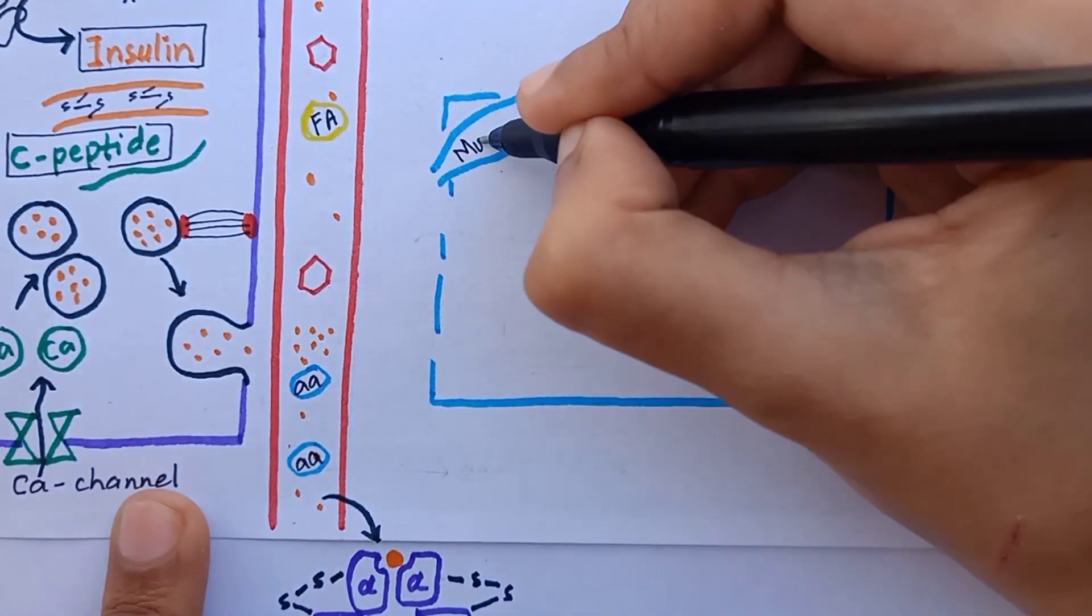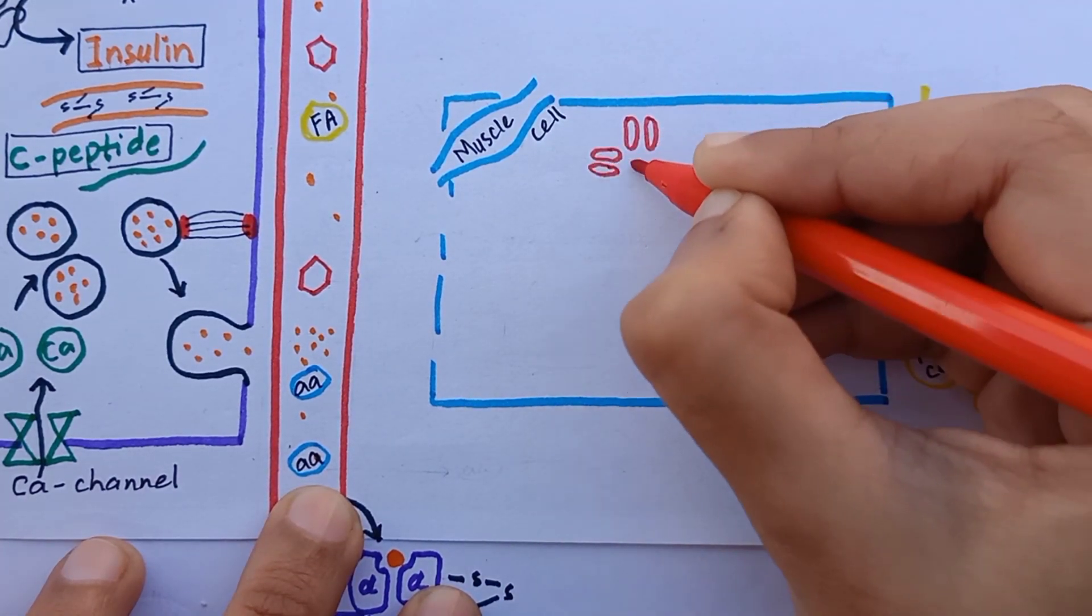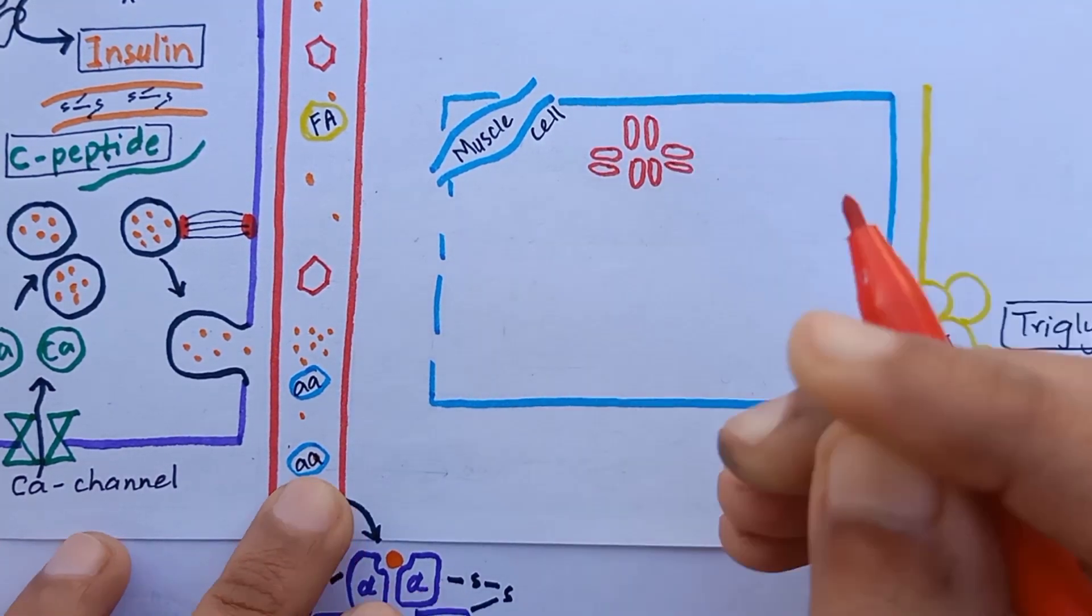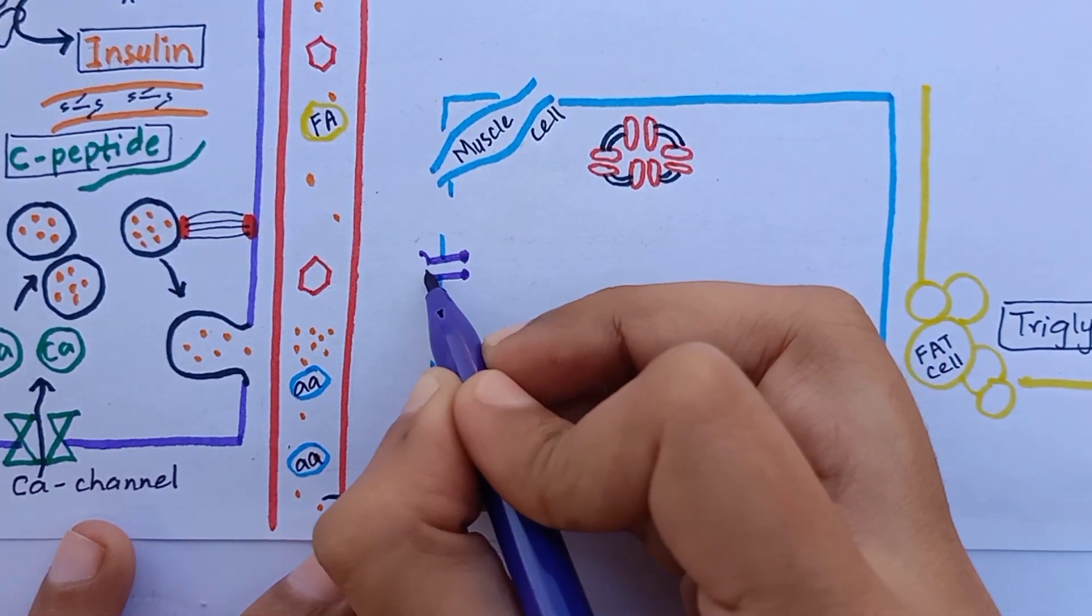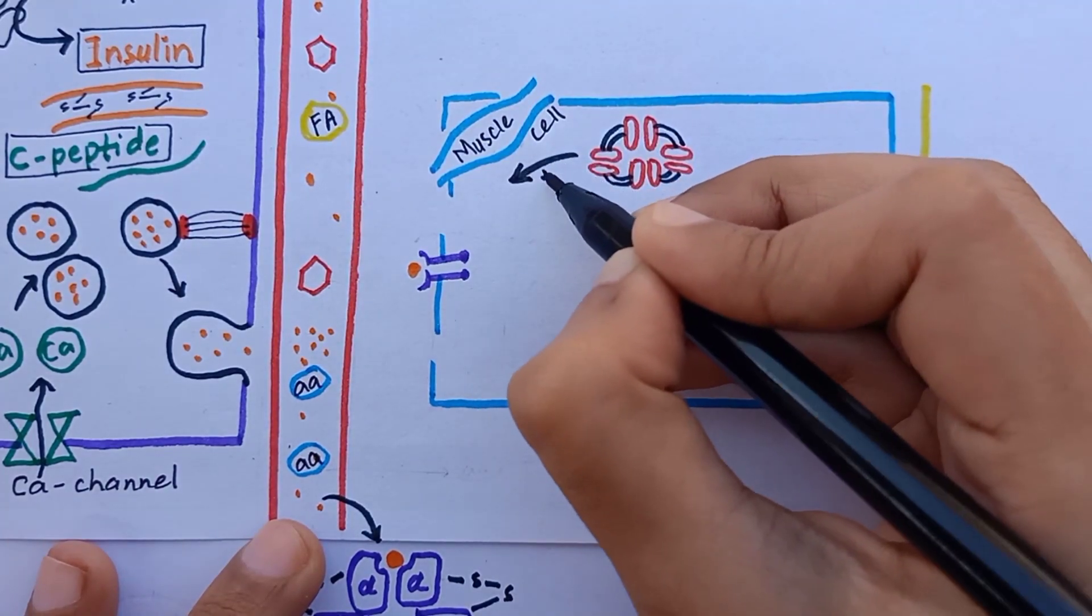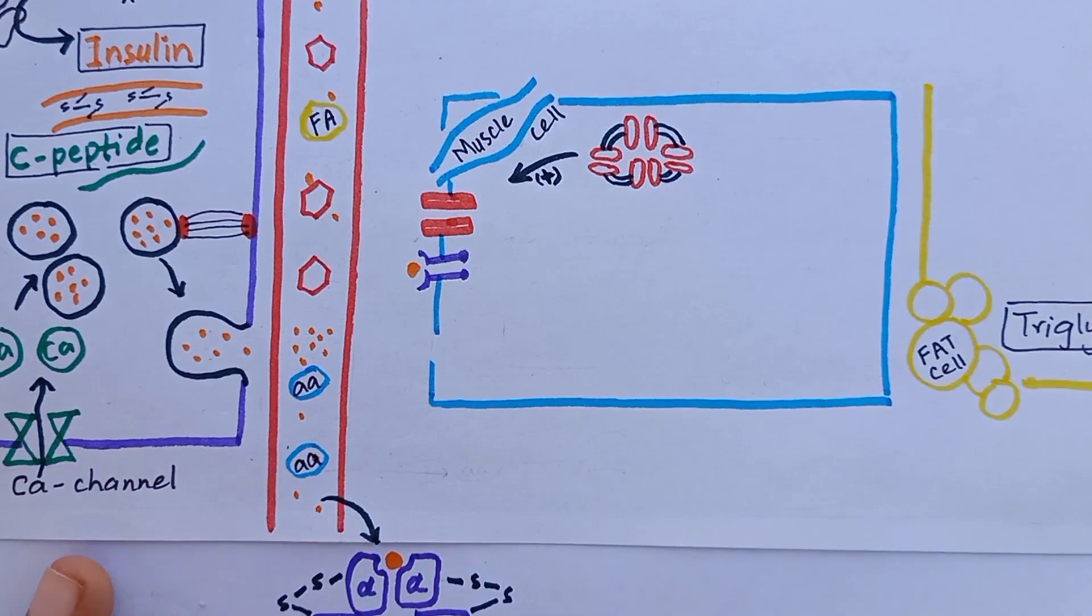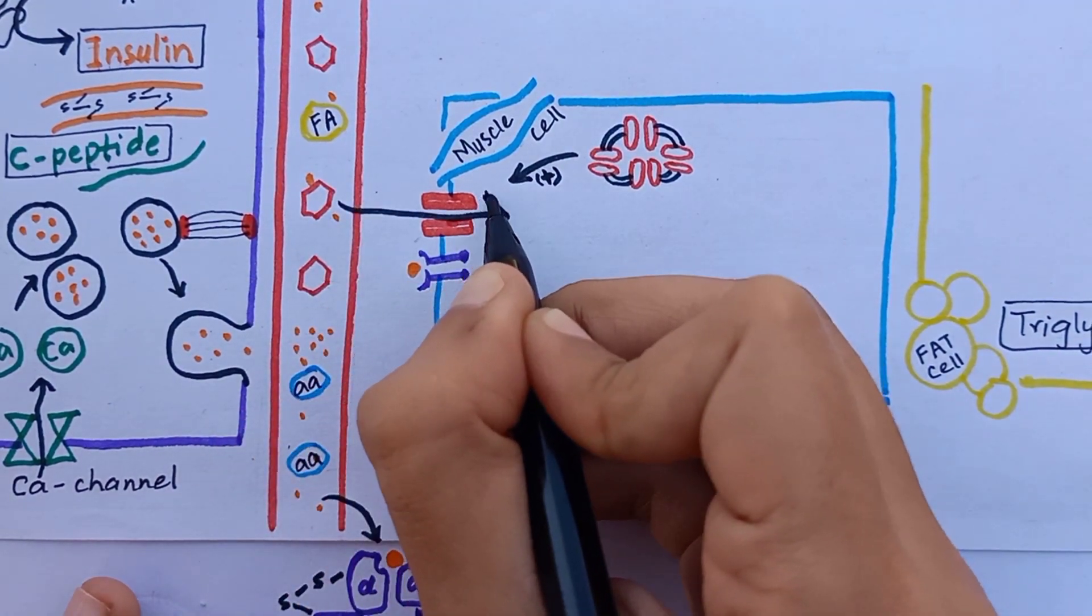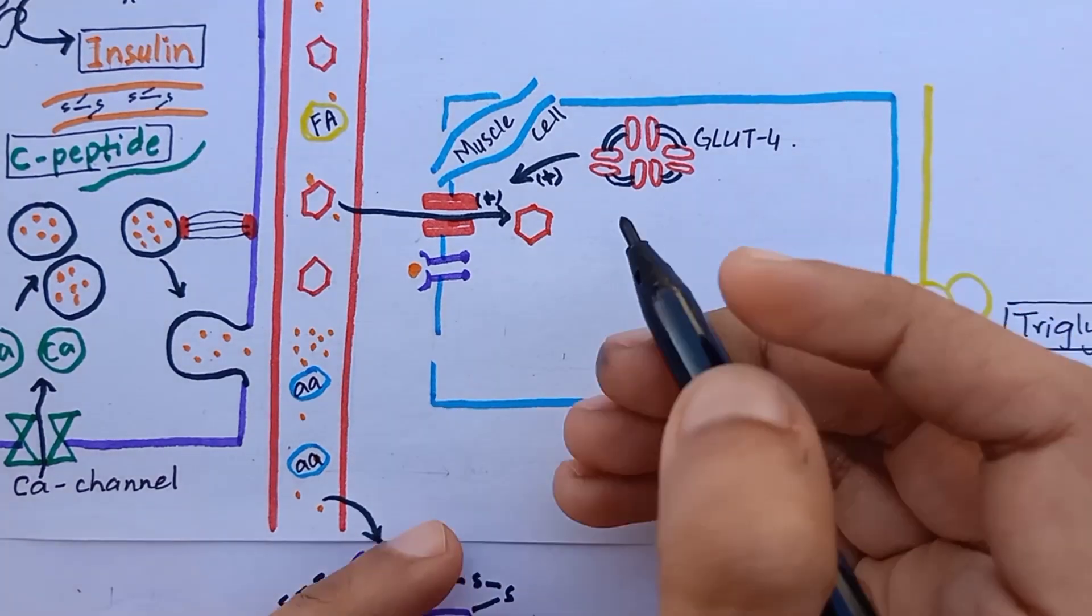In muscle cells, the glucose transporters are GLUT4 transporters that are present in the form of vesicles inside the cytoplasm. GLUT4 transporters are insulin-dependent. Insulin increases the translocation of GLUT4 transporter from intracellular storage deposits to the cell membrane, which in turn facilitates the diffusion of glucose into the cell.